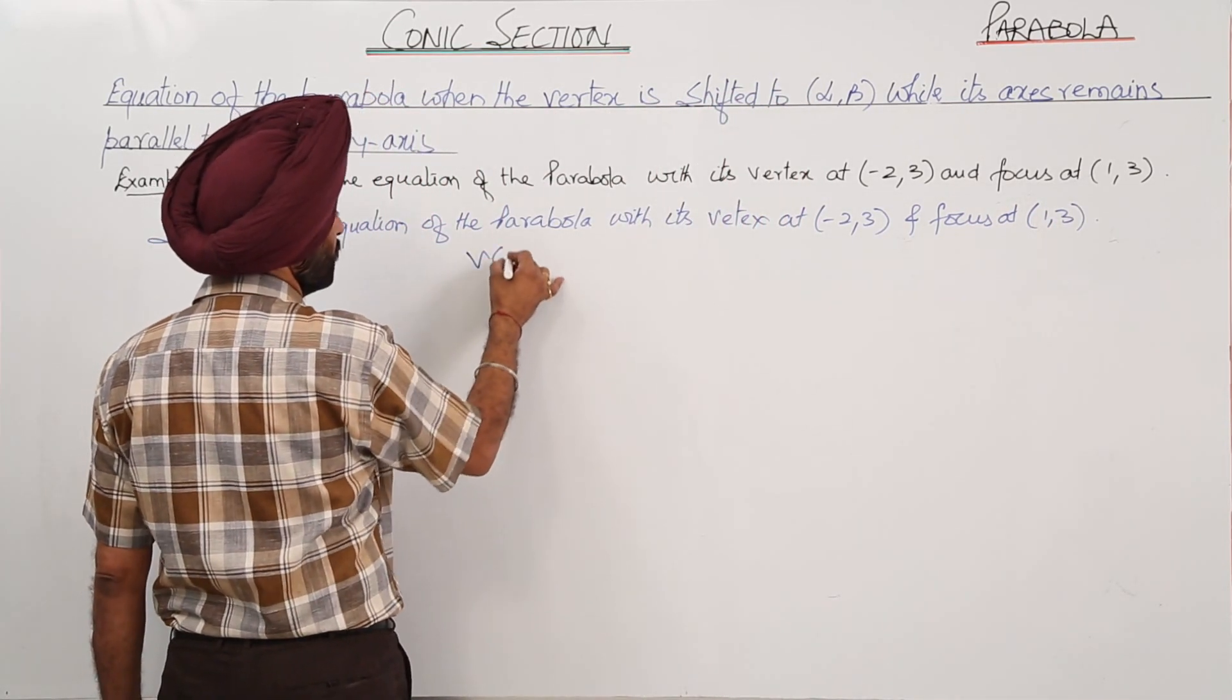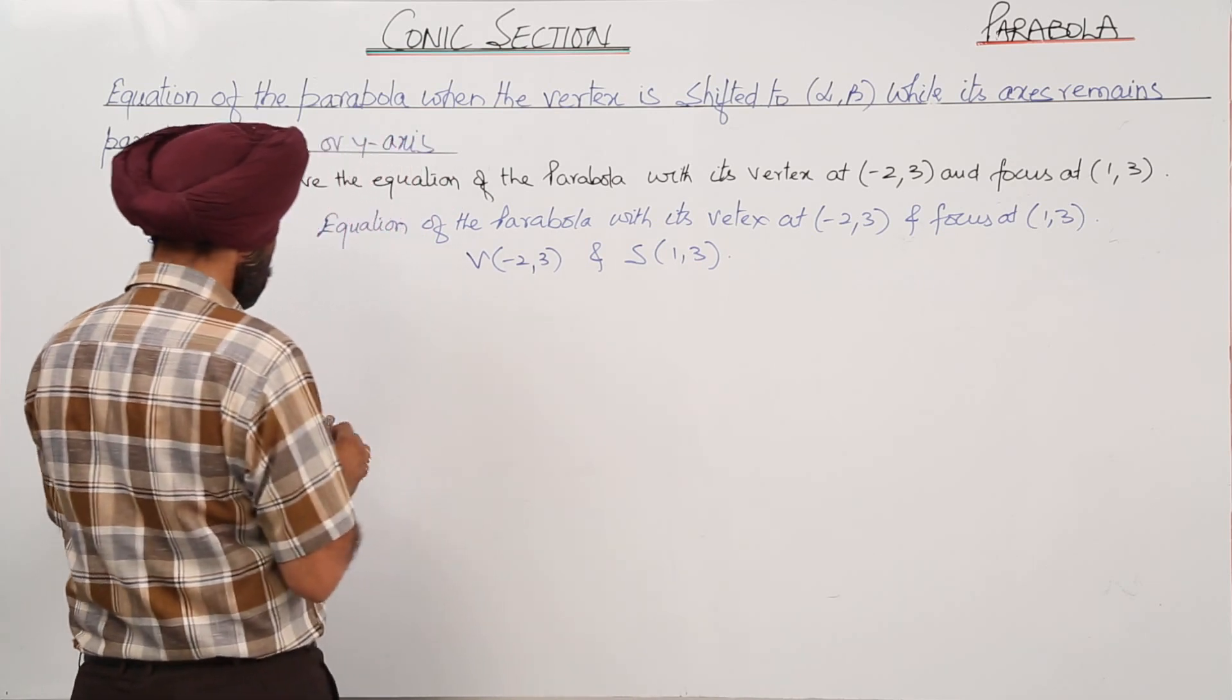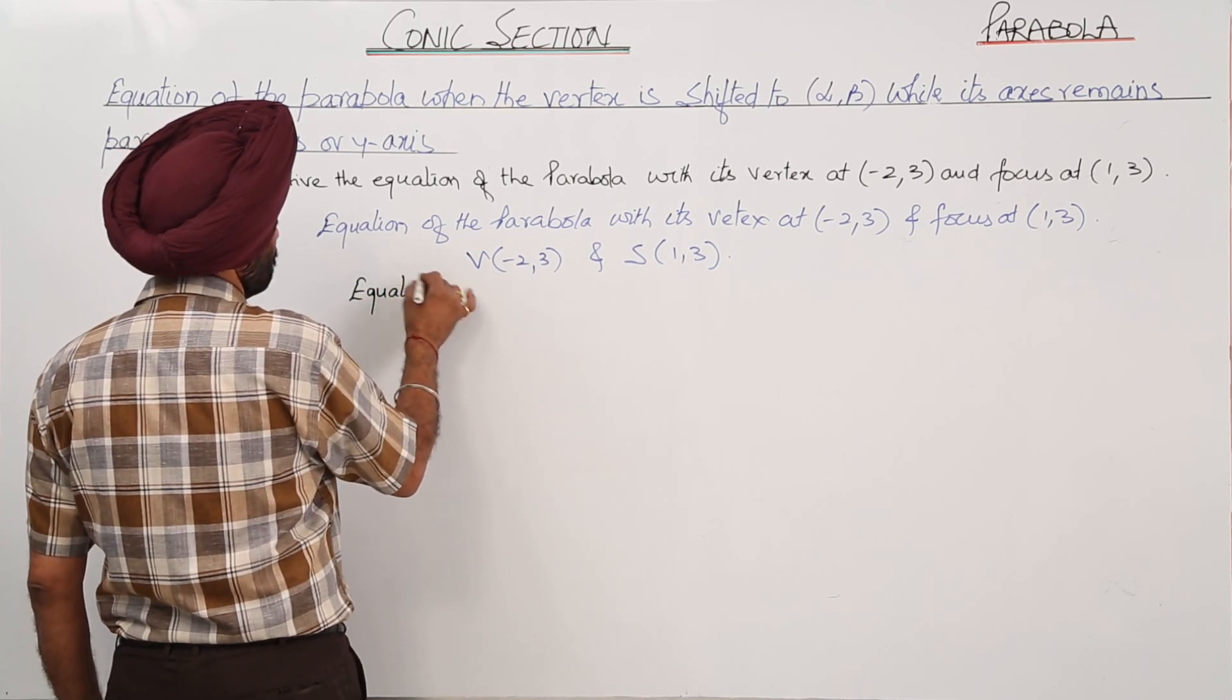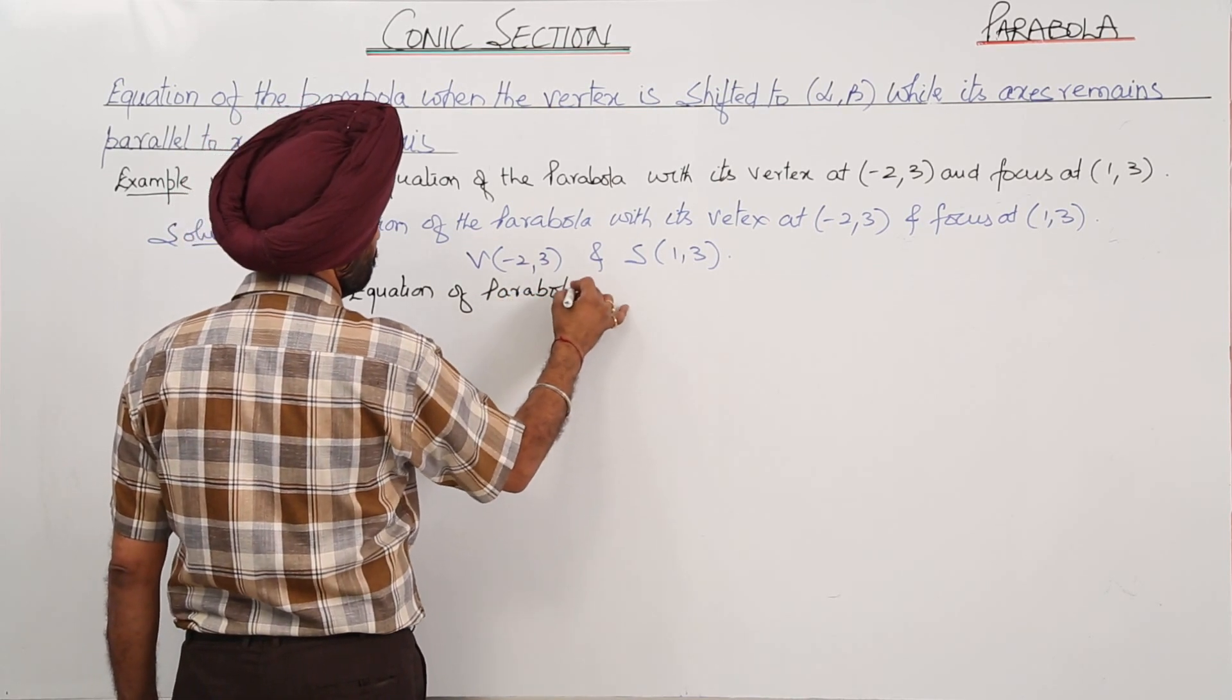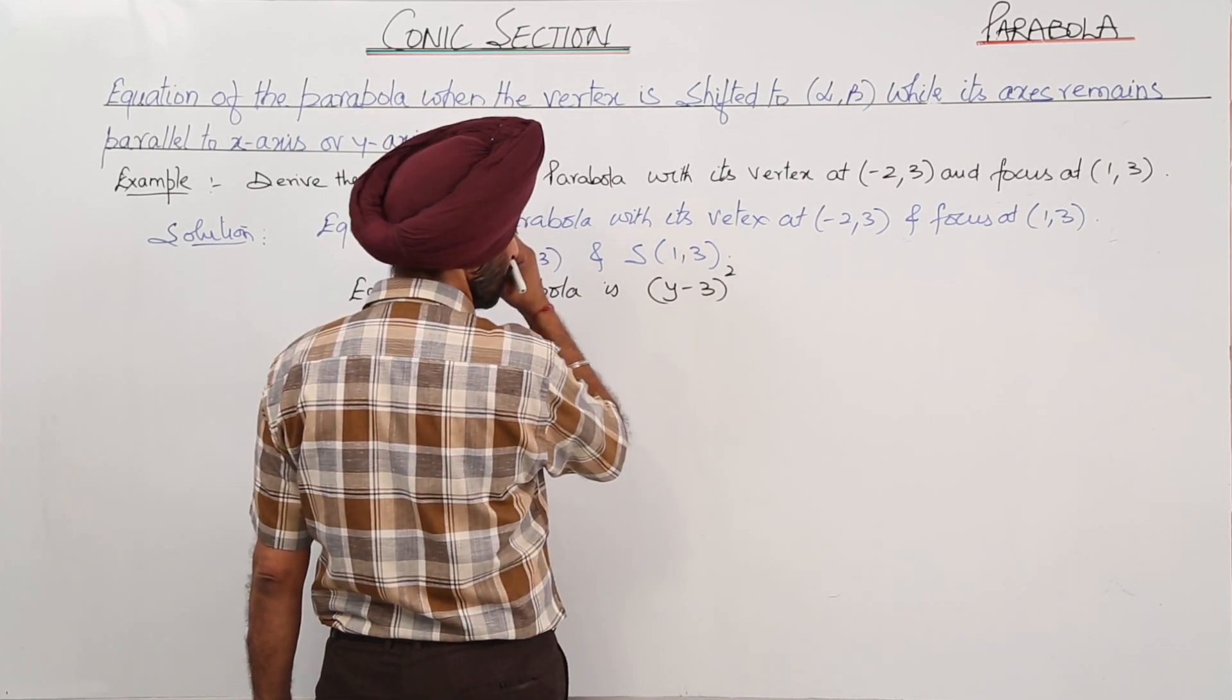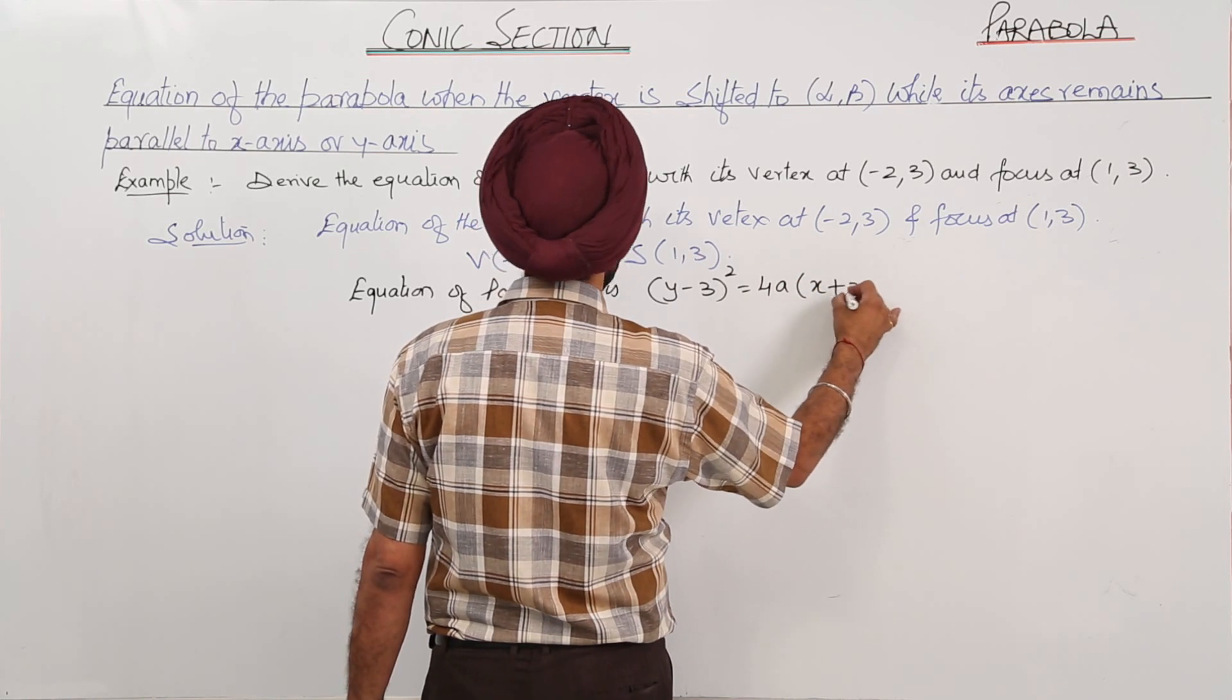We can write V as (-2,3) and focus as (1,3). Now, equation of parabola is (y-3)² = 4a(x+2).